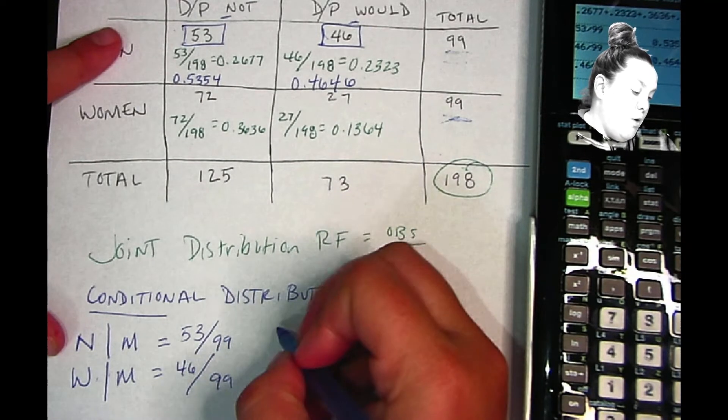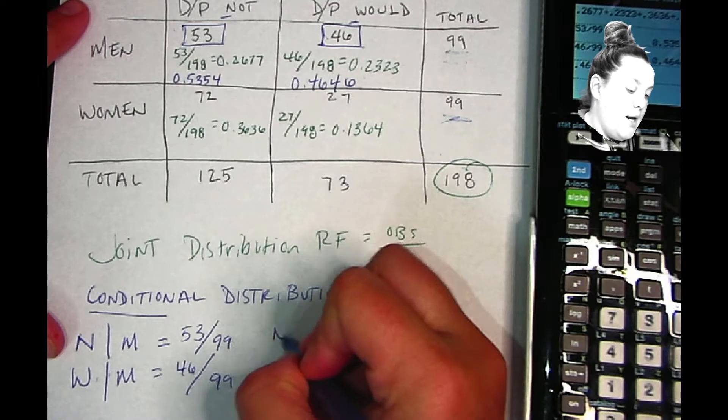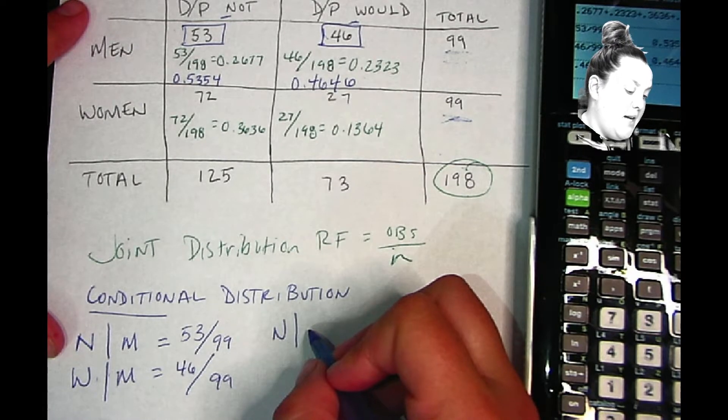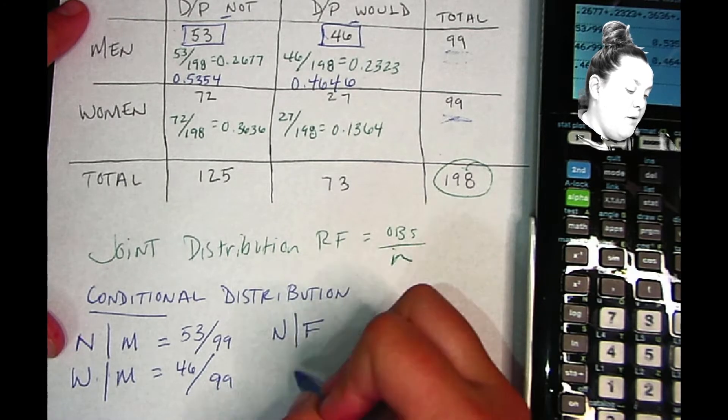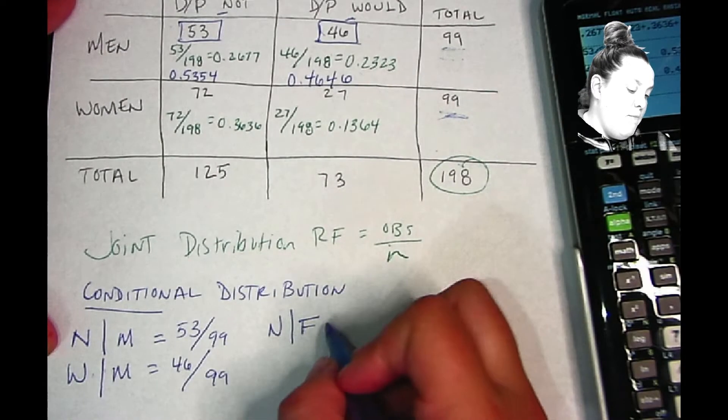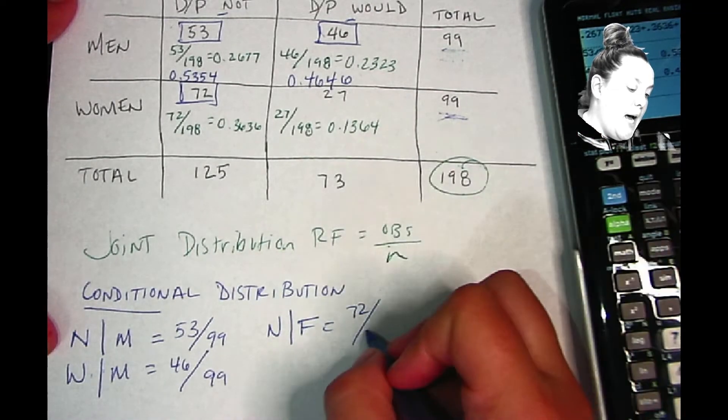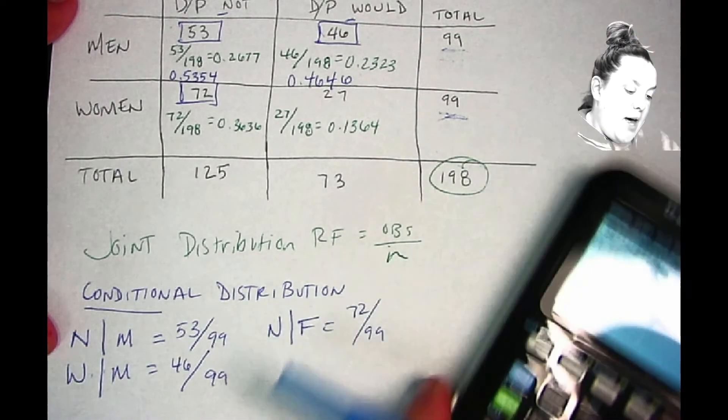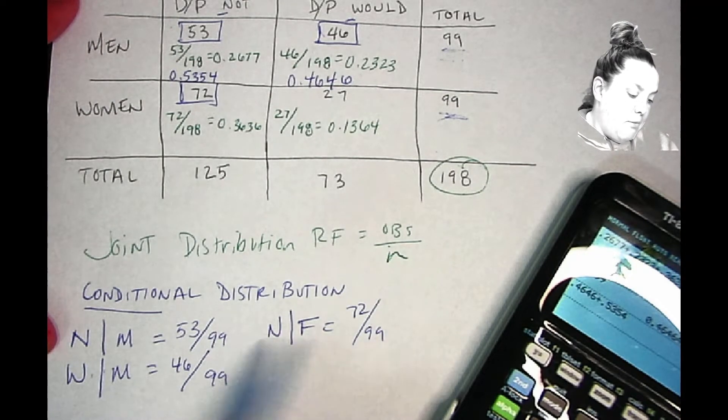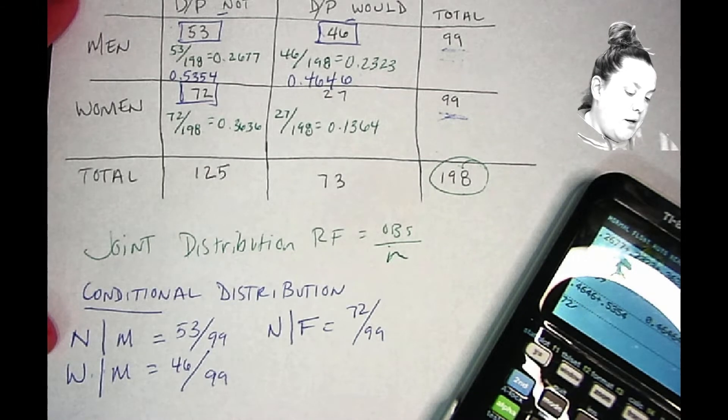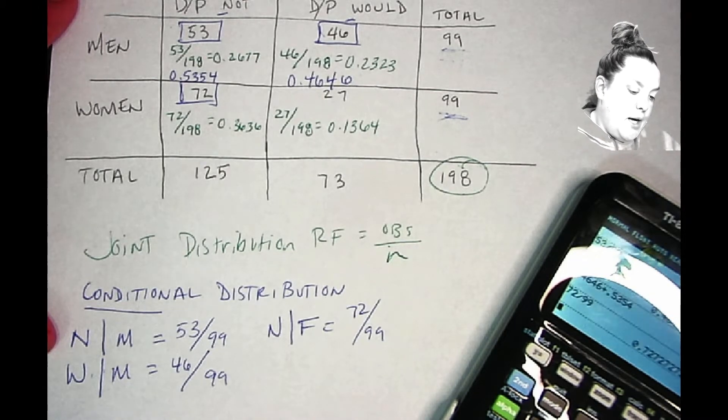Now if I were to do women, I would say not, they would not ride in a driverless passenger vehicle given—remember that's the straight line—they're female. So I use the 72 still, that's my observed count, but I use 99 because I have that condition on this problem. 72 divided by 99, and I come up with 0.727.